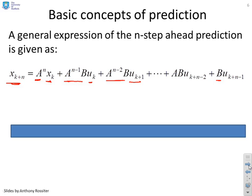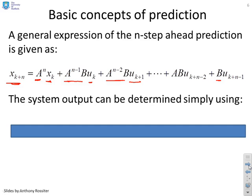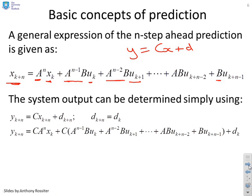If you wanted the system output, all we're going to do is use the fact that y = Cx + d. So what I do now is just substitute that in, and the only difference with the y is you'll see I've got a C term here, a C term here, and at the very end I've got this +d. So that's relatively straightforward.